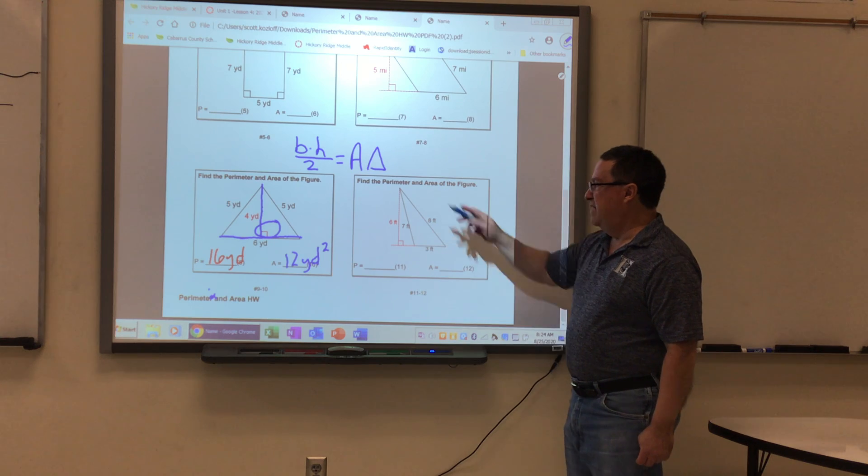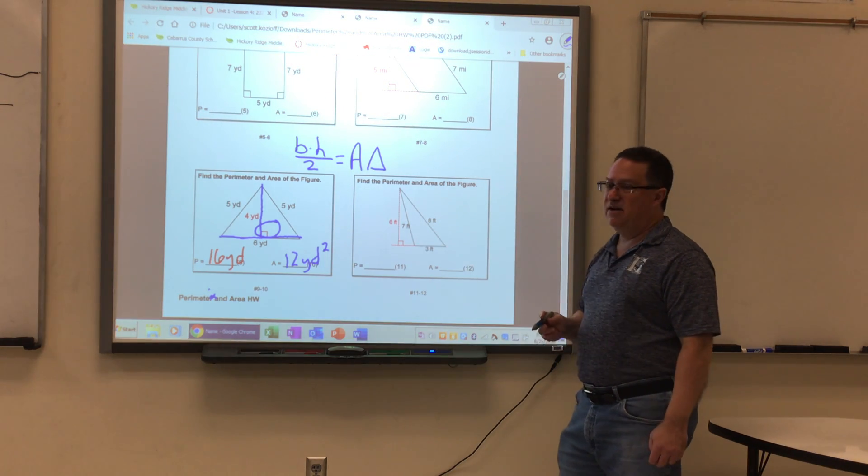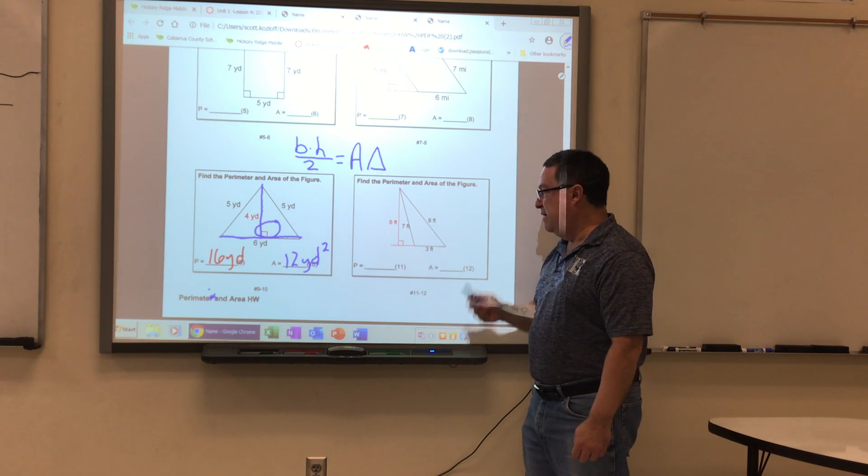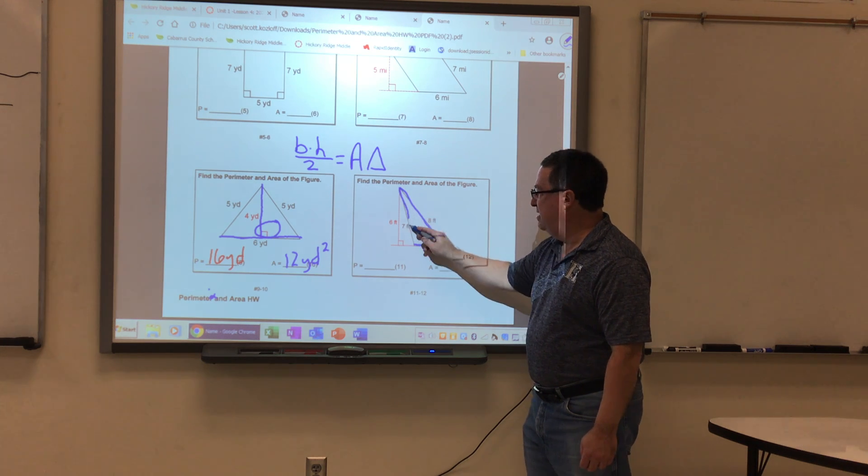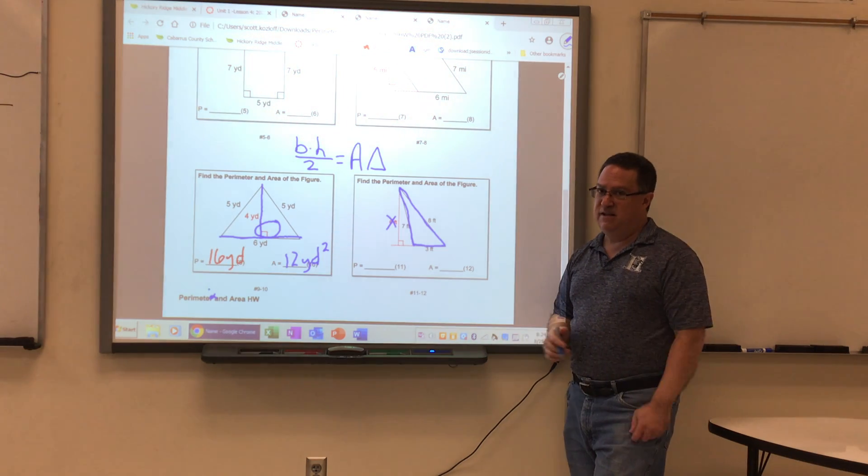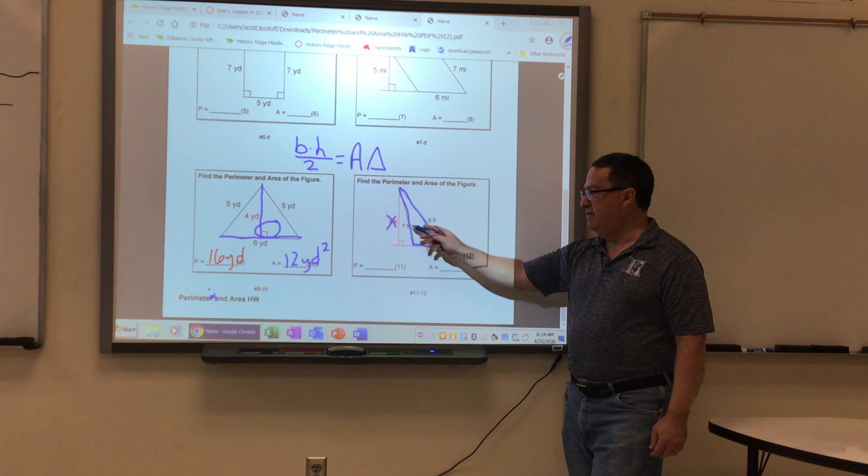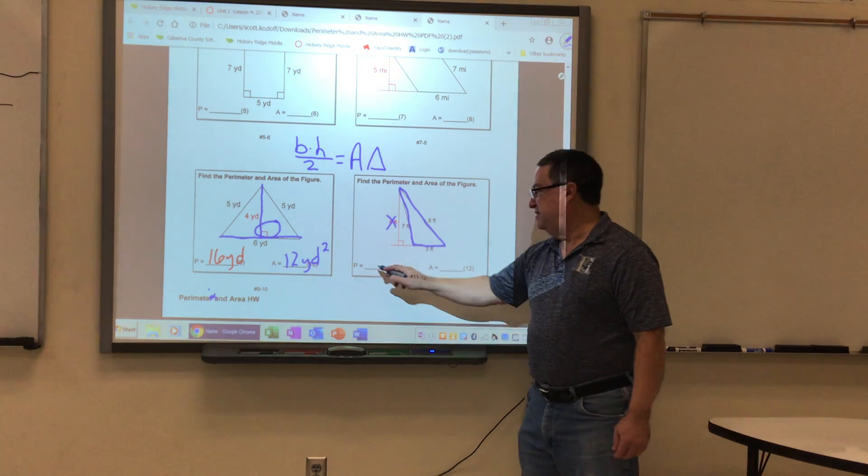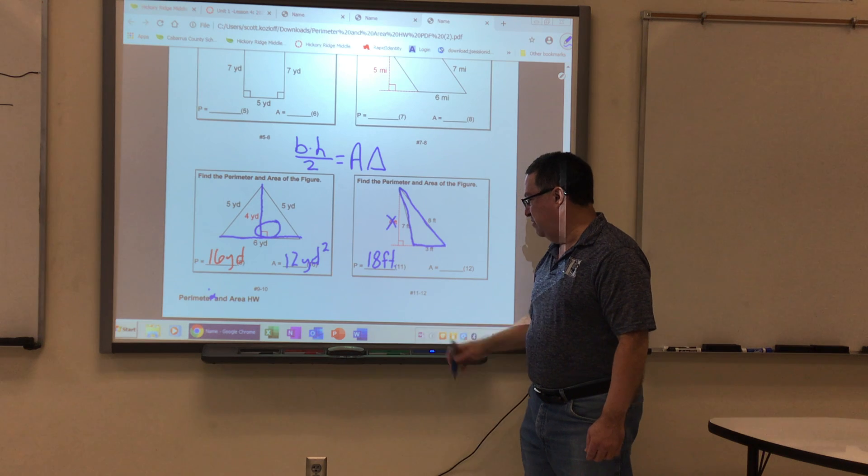Last one. Find the perimeter of another triangle. Now I see a lot of numbers here, and some of you get confused by that, but I'm going to remind you again. When I do perimeter, it's the solid lines. It's not the height. I crossed that out because I'm not using that for perimeter. So I'm using three plus eight, which is 11, plus seven is 18 feet. And that's how I determine my perimeter.